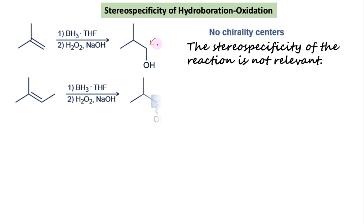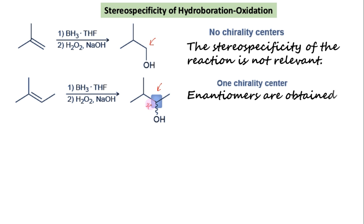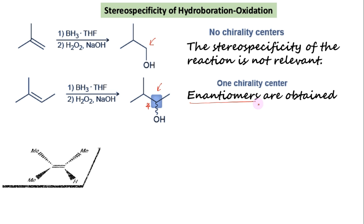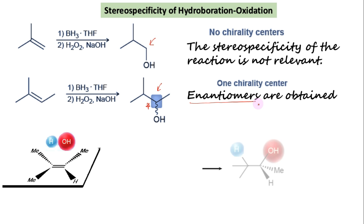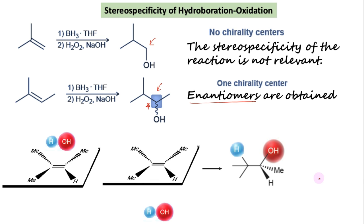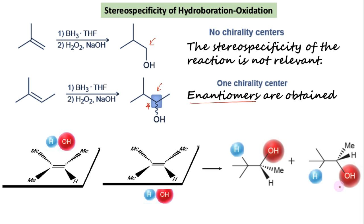Now consider the stereochemical outcome in a case where one chirality center is formed in the product. For example in this case, one chiral carbon is generated, as highlighted in blue. In such a case, both enantiomers are obtained, because syn addition can take place from either face of the alkene with equal likelihood. It may approach from the top side to form a product in which both H and OH are situated on the top face, or from the bottom side to form a product in which both H and OH are on the bottom side. These products are enantiomeric to each other.